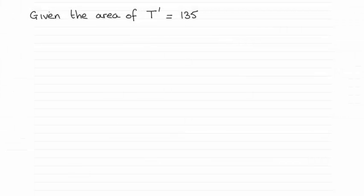Hi there. Now for the last part of this question we were given that the area of the triangle t prime was 135 and asked to work out the value of c. It turns out that c is one and a half, three over two.